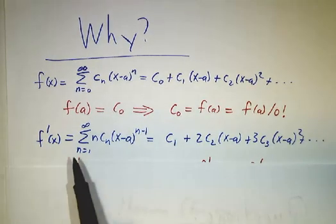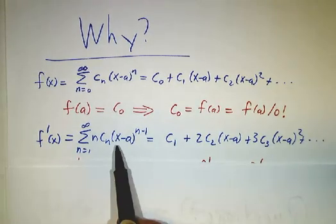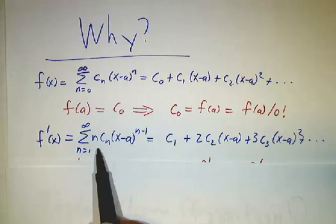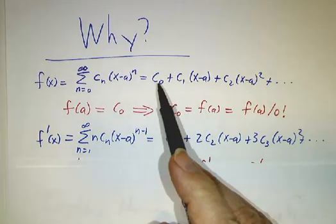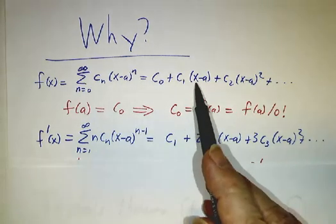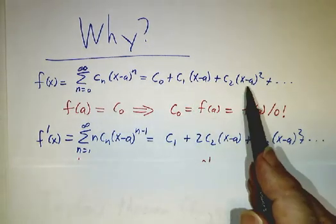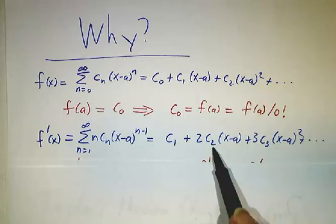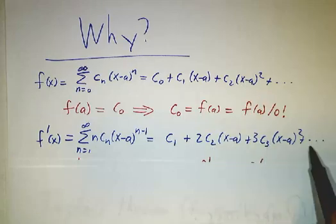The derivative of a power series, we learned that you can take a derivative term by term as long as you're inside the radius of convergence. So the derivative is, well, the derivative of c0 is 0. The derivative of c1 times x minus a is c1. The derivative of c2 x minus a squared is 2c2 times x minus a and so on.